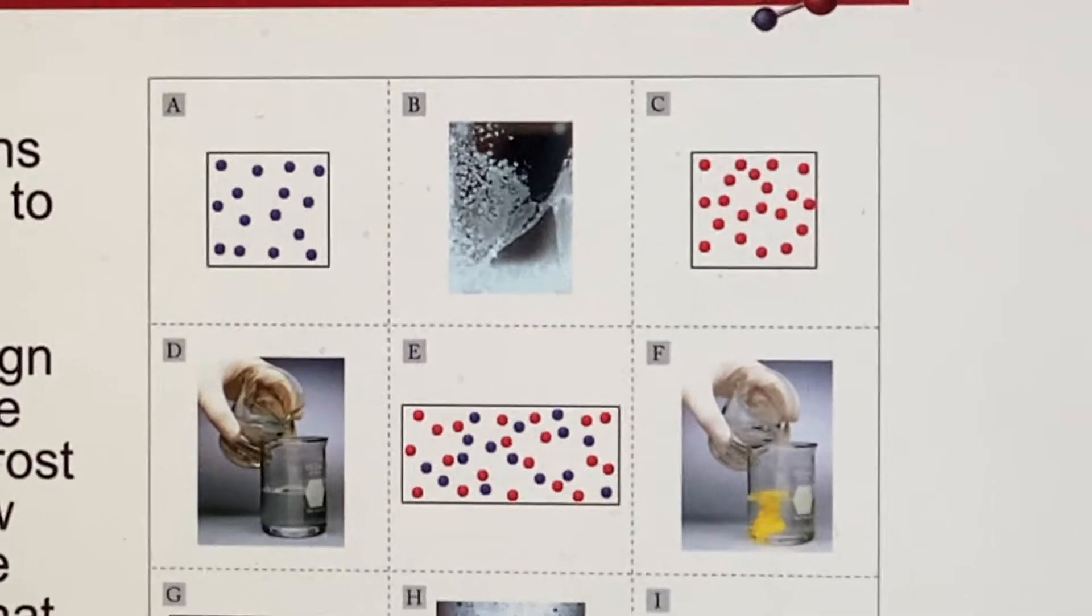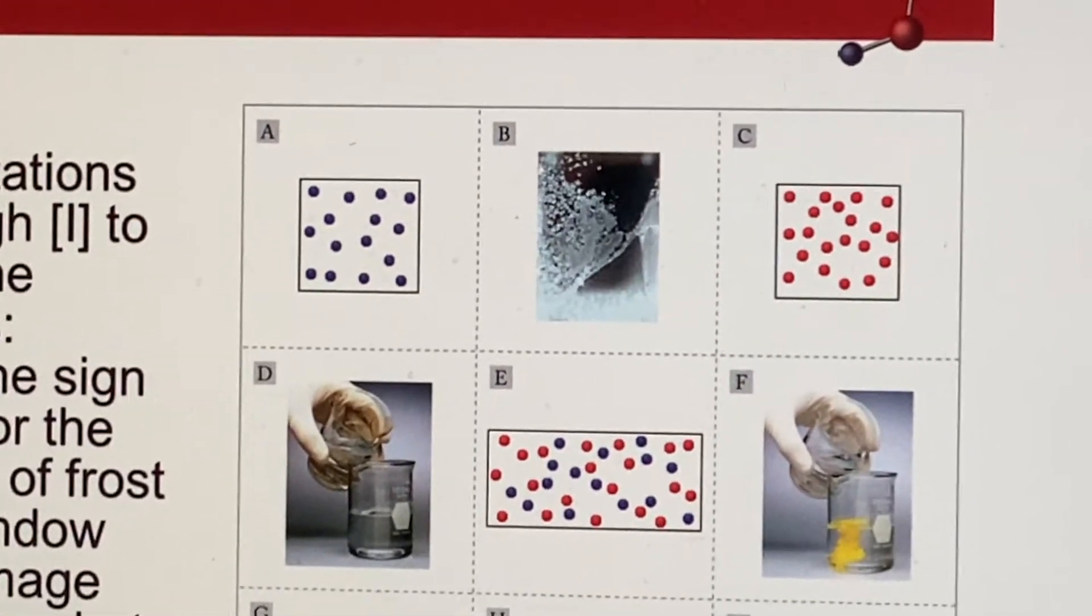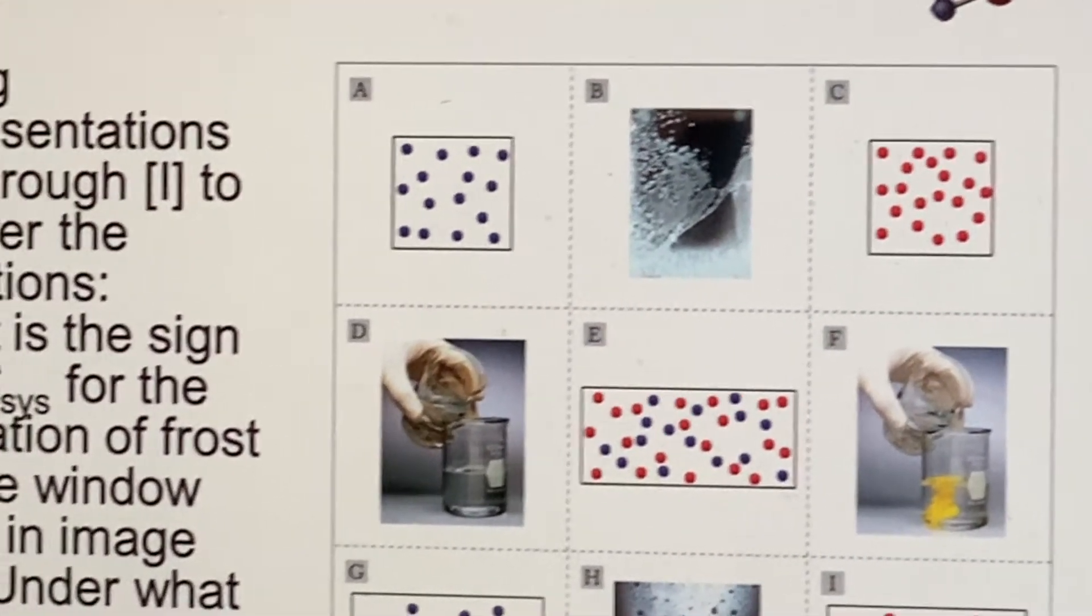Okay, so living in California, you probably haven't seen this happen too often. But when does frost actually form on a window?